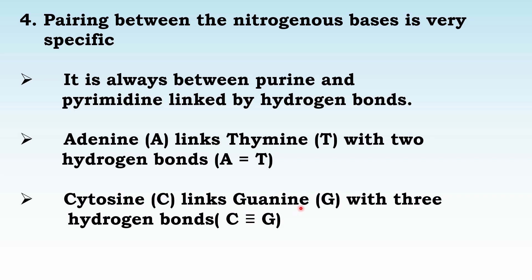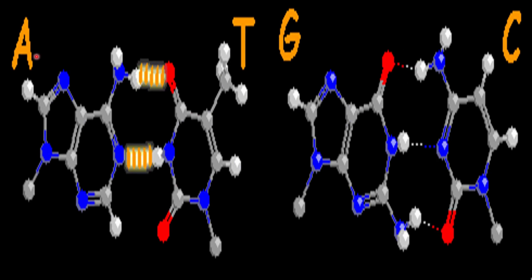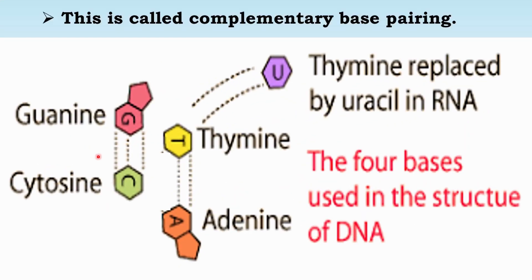Guanine-cytosine links are formed with 3 hydrogen bonds — a triple bond. Adenine-thymine pairs are formed with 2 hydrogen bonds — a double bond. So G-C has a triple bond and A-T has a double bond.